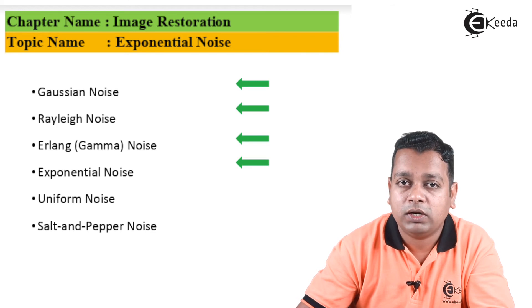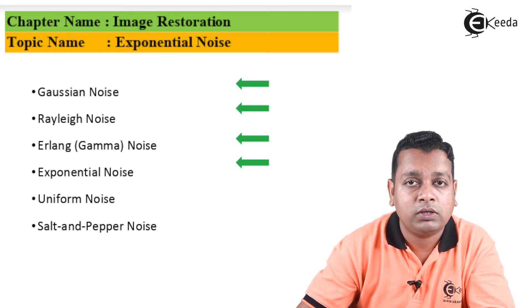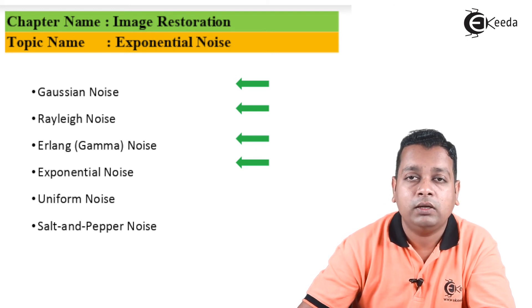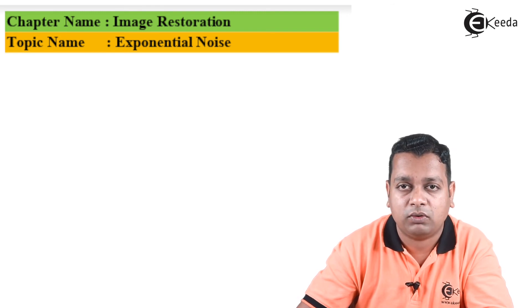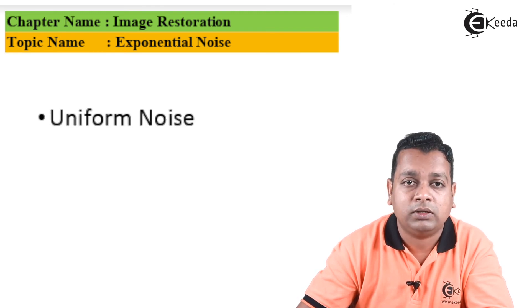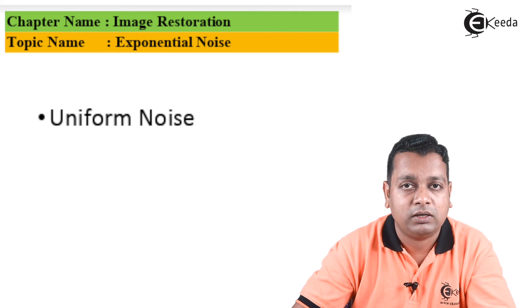So the noise models that we have—six in number: Gaussian noise, Rayleigh noise, Erlang (also called gamma noise), exponential noise, uniform noise, and salt and pepper noise—we are covered with four noise models. Now we are left with only two: uniform noise and salt and pepper noise. By the next lecture, the remaining uniform noise we are going to address so that the foundation to add noise to the image shall be getting cleared, and we can opt for the image restoration techniques in subsequent topics.